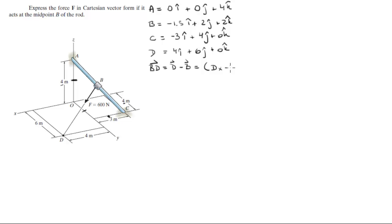Which is equal to Dx minus Bx in the i, plus Dy minus By in the j, plus Dz minus Bz in the k. So when you plug the numbers in for vector D and vector B, you're gonna get that this is equal to 5.5i plus 4j minus 2k.